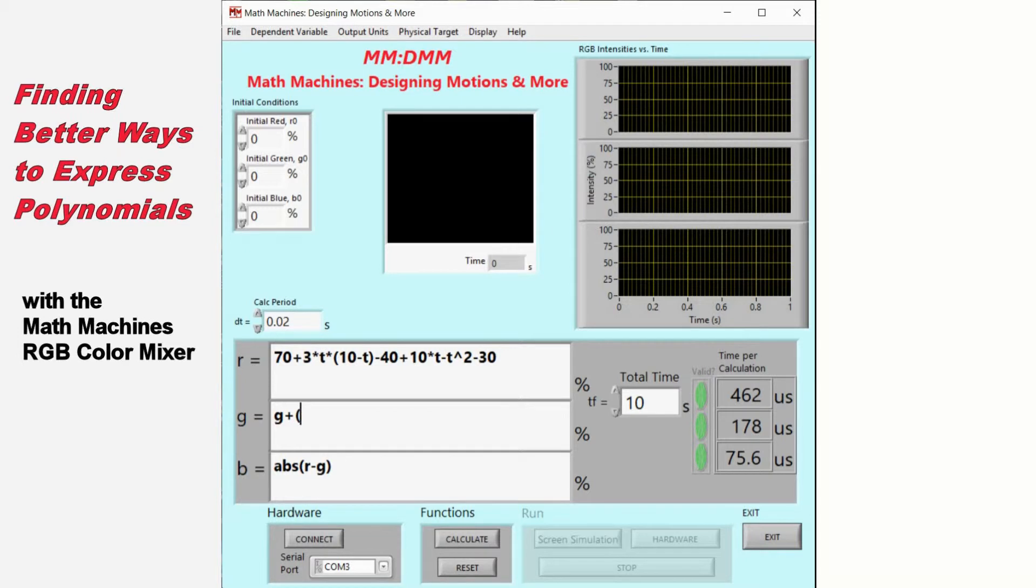If we use the derivative of the earlier expression evaluated at time t, we get a significant improvement in computer speed, but seem to have lost some precision.